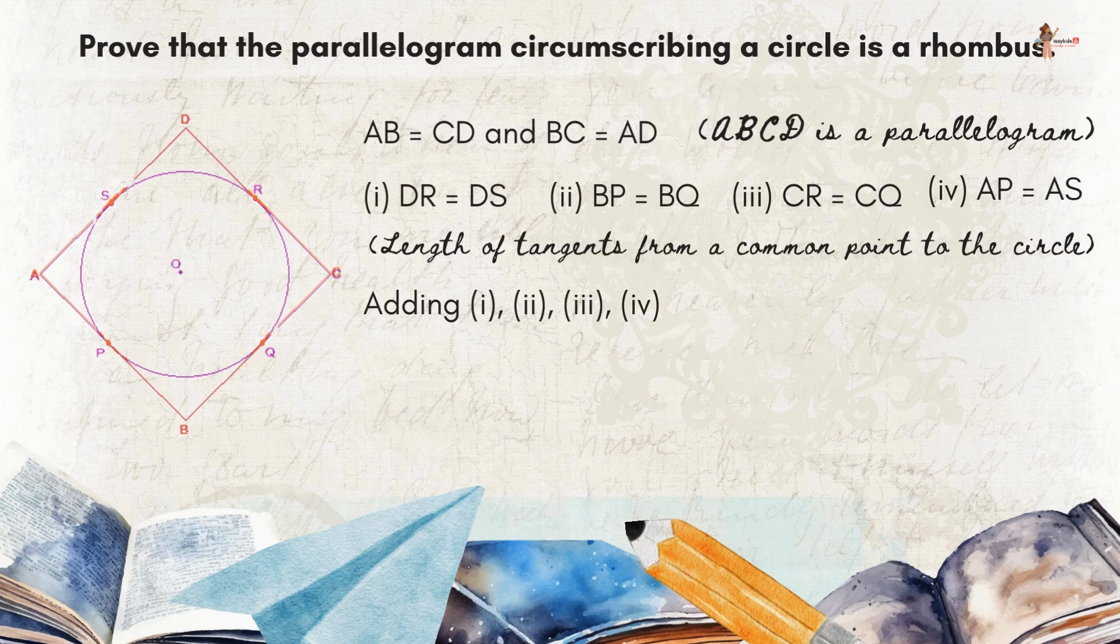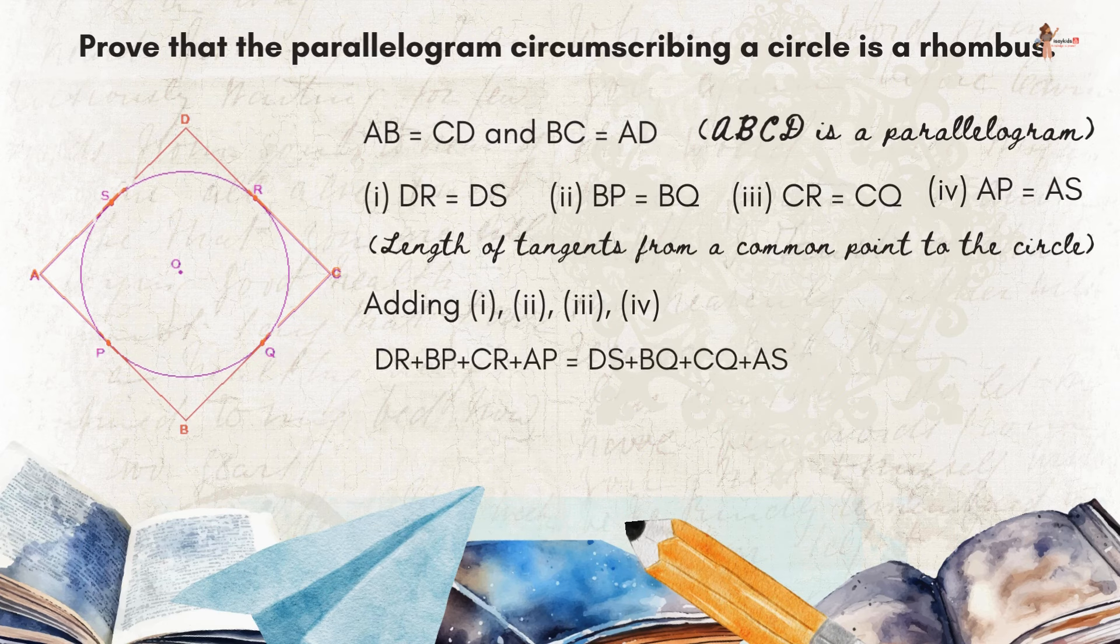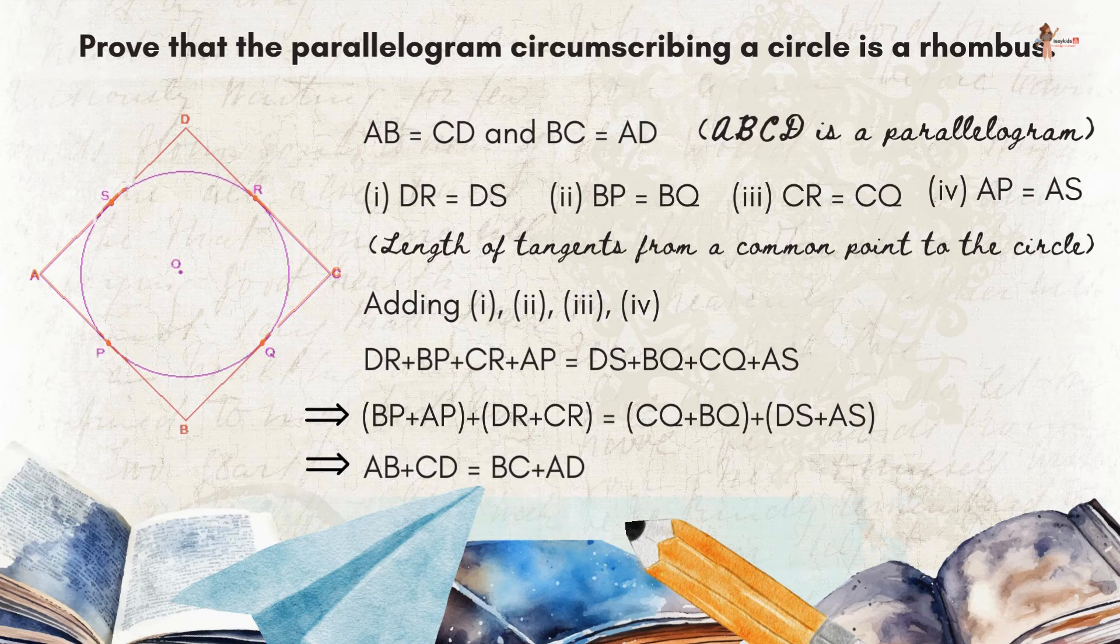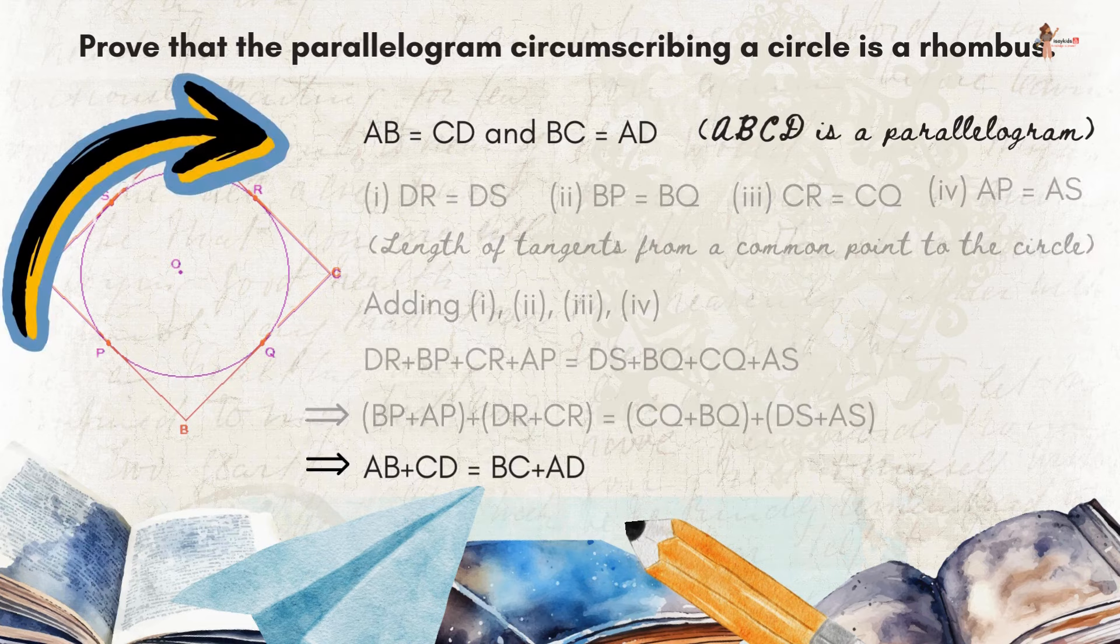Adding all these we get this. Now let's rearrange it. We would get this. Therefore we get AB plus CD is equal to BC plus AD.